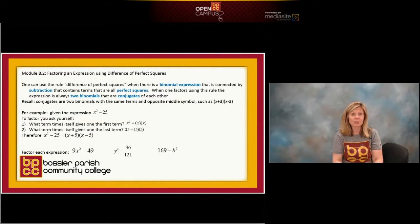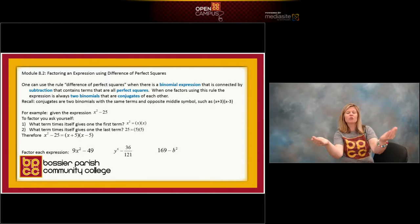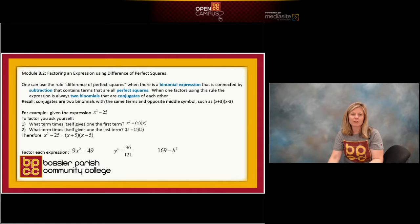Okay, let's factor an expression using the rule difference of perfect squares. First thing, if you're going to have a subtraction symbol, then there's got to be a term in front and a term behind. So to factor using the rule difference of perfect squares, you're going to have a binomial, two terms connected by subtraction.